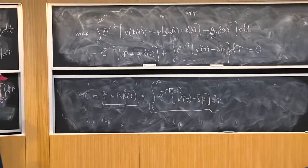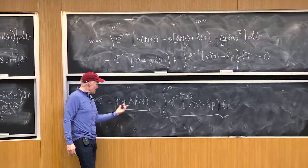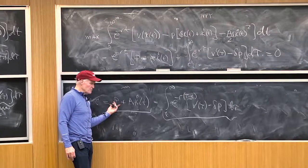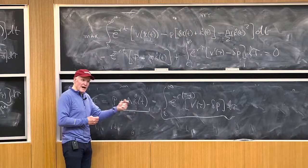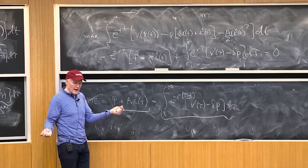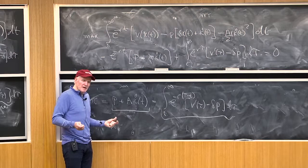The rising supply price is not coming because the price of capital is going up as I invest in more capital, but my adjustment costs are going up. So again, why do I slow down investment in this model? Not because I'm going to have to pay more for capital if I want to buy it faster, but because it's going to cost me more to put it in place if I try to put it in place too fast.